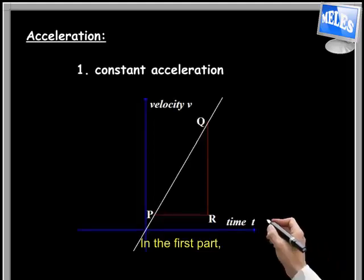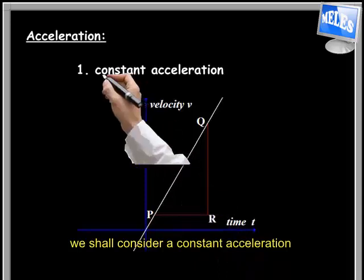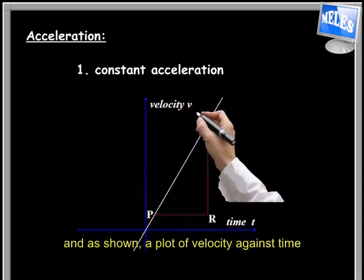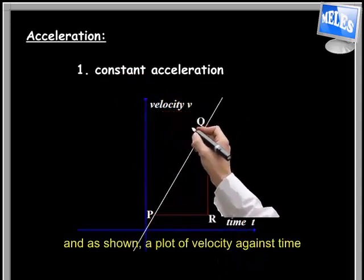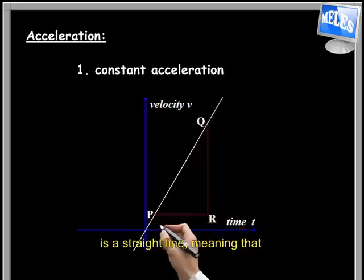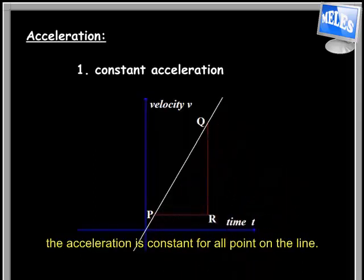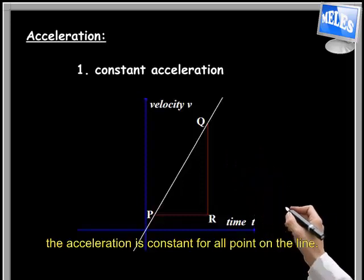Acceleration. In the first part we shall consider constant acceleration. As shown, a plot of velocity against time is a straight line, meaning that the acceleration is constant for all the points on the line.